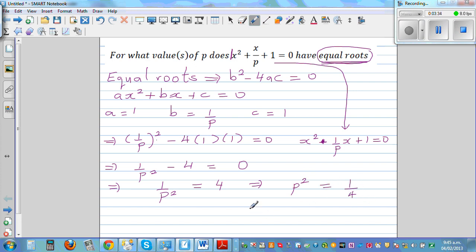And making p squared the subject, cross multiplying, p squared is 1 quarter. And again, this next step is very crucial. p is, you should not write 1 half, it is plus or minus 1 half. So p is plus or minus 1 half. So these are the two values of p.